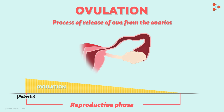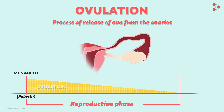This phase is the reproductive phase in females. The beginning and end of this phase have scientific names. The commencing point is called menarche, which a girl experiences when she steps into puberty; the average age range is around 12 to 14 years. The time when it terminates is called menopause, with an average age range of 45 to 50 years.